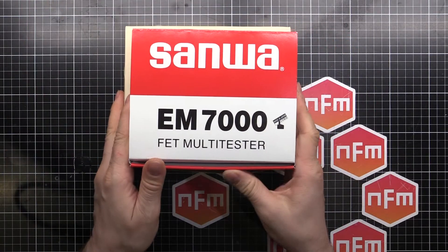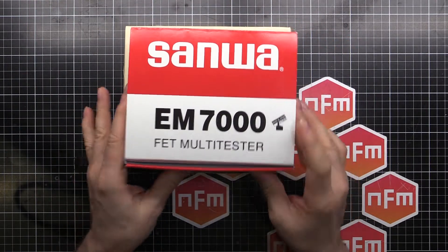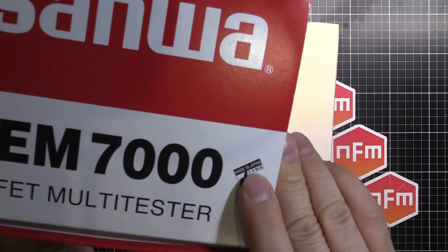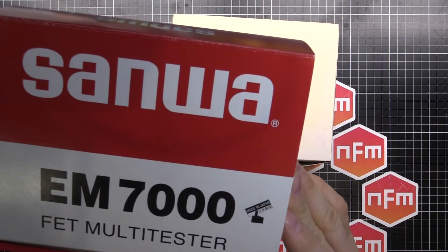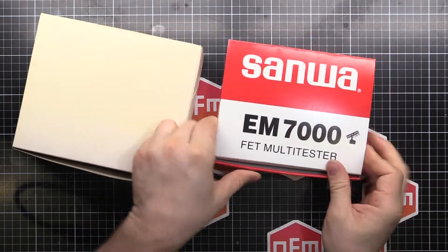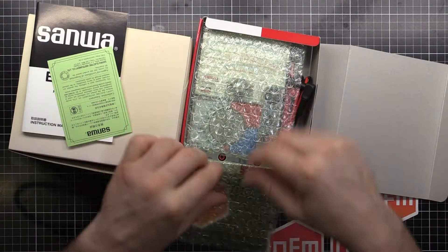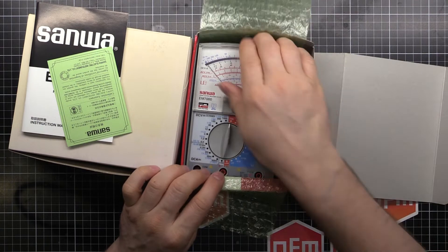Sanwa EM7000 FET multi-tester. Made in Japan. That's what it says in Japanese there. It's an analog multimeter.